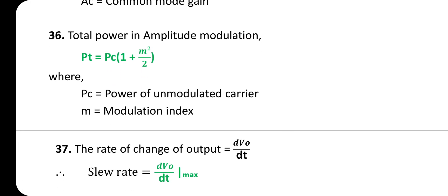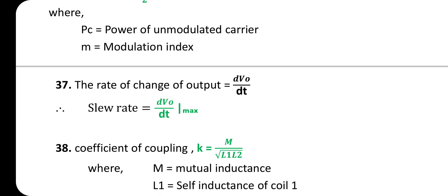Total power in amplitude modulation: P_T = P_c × (1 + m²/2), where P_c is the power of the unmodulated carrier and m is the modulation index. The rate of change of output = dV₀/dt. Slew rate is the maximum of dV₀/dt.